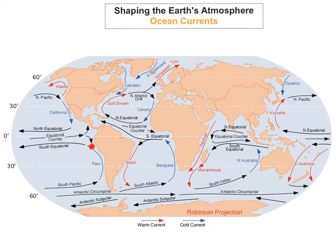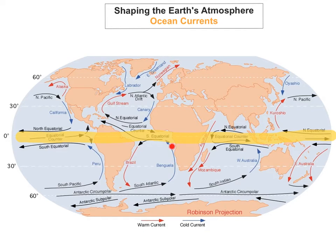You can see the Peruvian current is moving towards the equator — the equator line is here. All the currents moving towards the equator are cold, and all those moving away from the equator are warm, as you can see here.